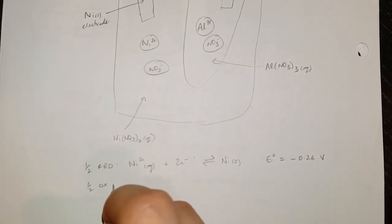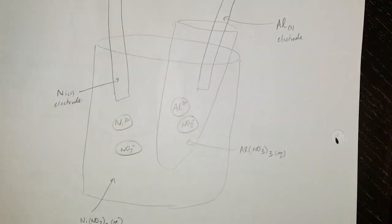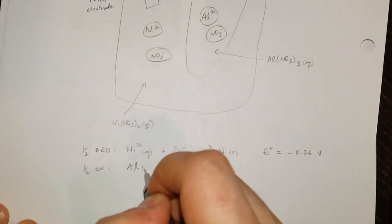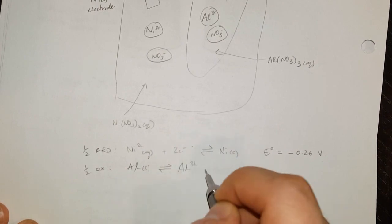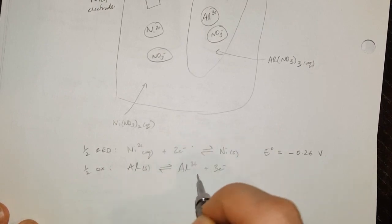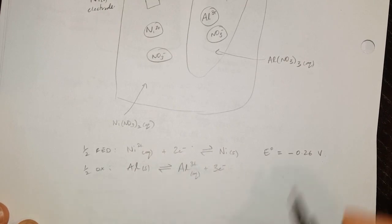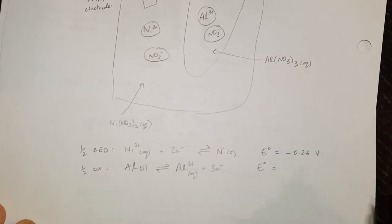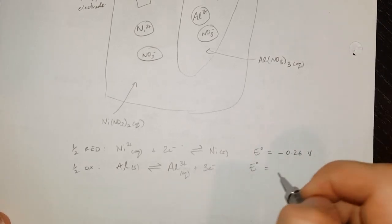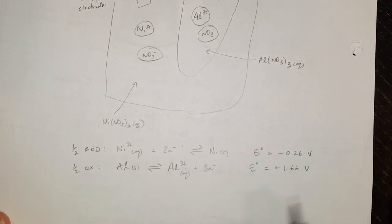Half oxidation: aluminum is going to release three electrons and form aluminum(III) positive. So my aluminum is going to dissolve and make three-positive ions. The E° value for aluminum is positive 1.66 volts.